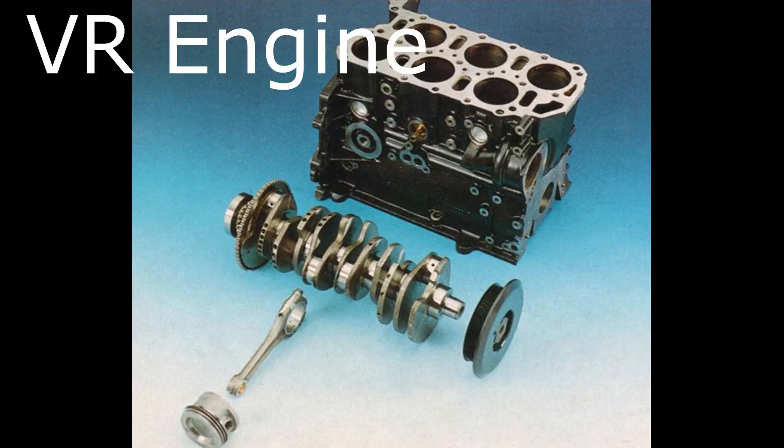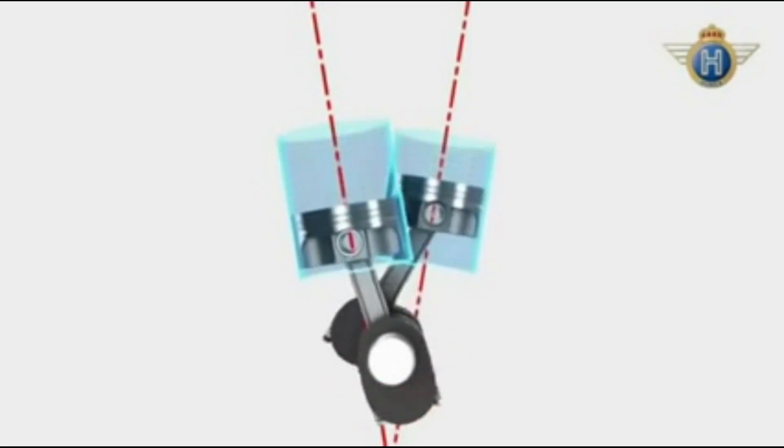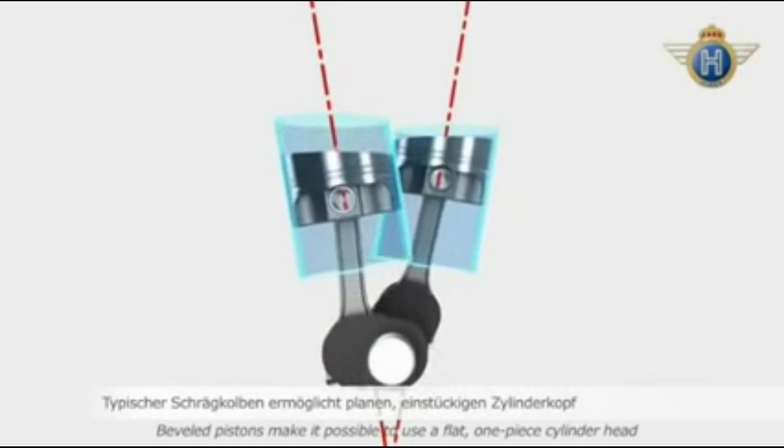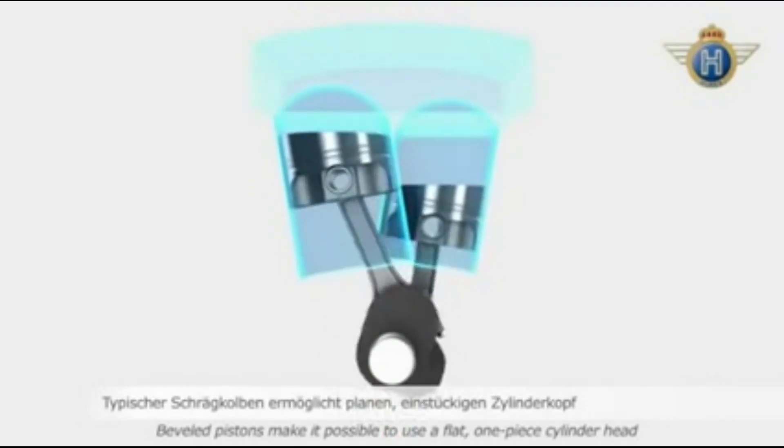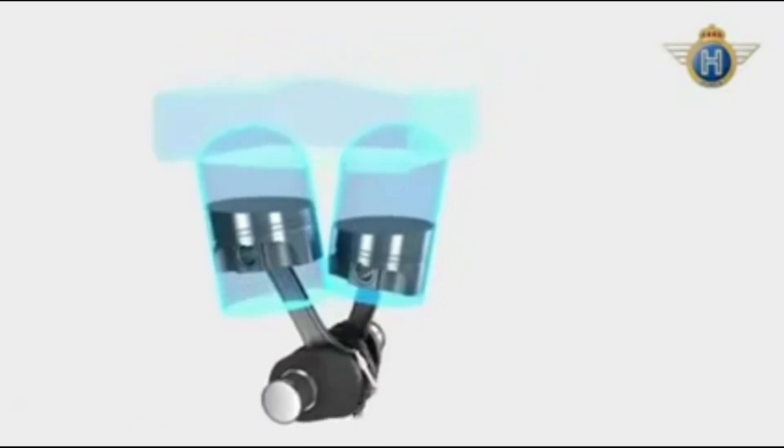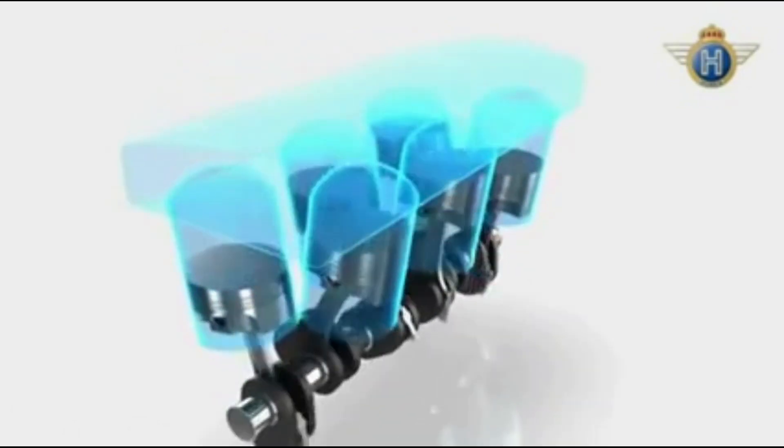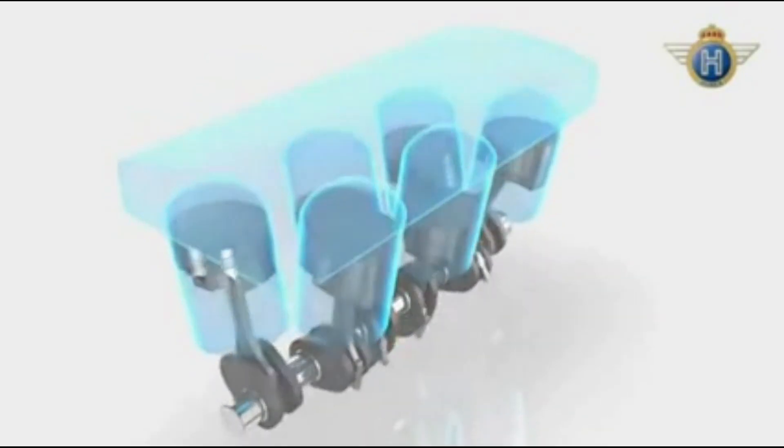The next in the list is the VR engine. The VR engine was developed by the VW Group. It uses a similar principle to V engines, but the distance between two rows of cylinders is so narrow that they are squeezed together in one engine block. These engines are rarely used now and are only used in some VW cars.